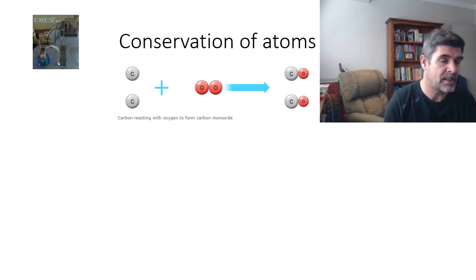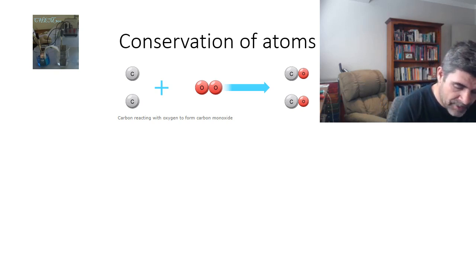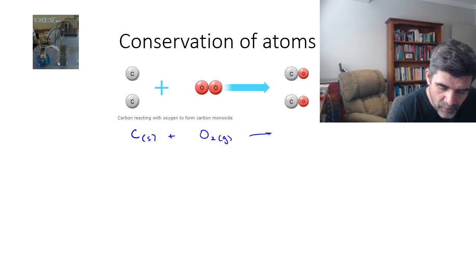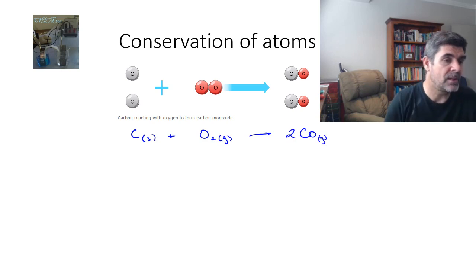So here is one particular example. Carbon solid reacting with oxygen gas can form carbon monoxide. Now of course this is just one particular combination of carbon and oxygen, but it does provide us with a way of identifying how our modelling can help us to identify conservation and also the rearrangement of atoms during chemical reactions.